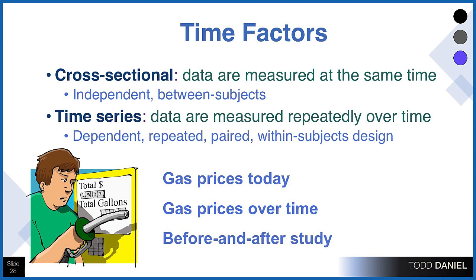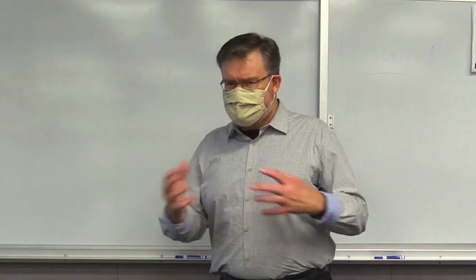Cross-sectional data are data measured at the same time or approximately the same time — these are independent or between-subjects designs. The other way to collect data is through a time series, where the same data are collected or measured repeatedly over time — also called dependent measures, repeated, or paired, as in within-subjects designs. For instance, measuring gas prices today would be cross-sectional. But measuring gas prices over subsequent months would be time series — collecting the same data point over multiple weeks or months. A before-and-after study where you measure, apply a treatment, then measure again is time series.